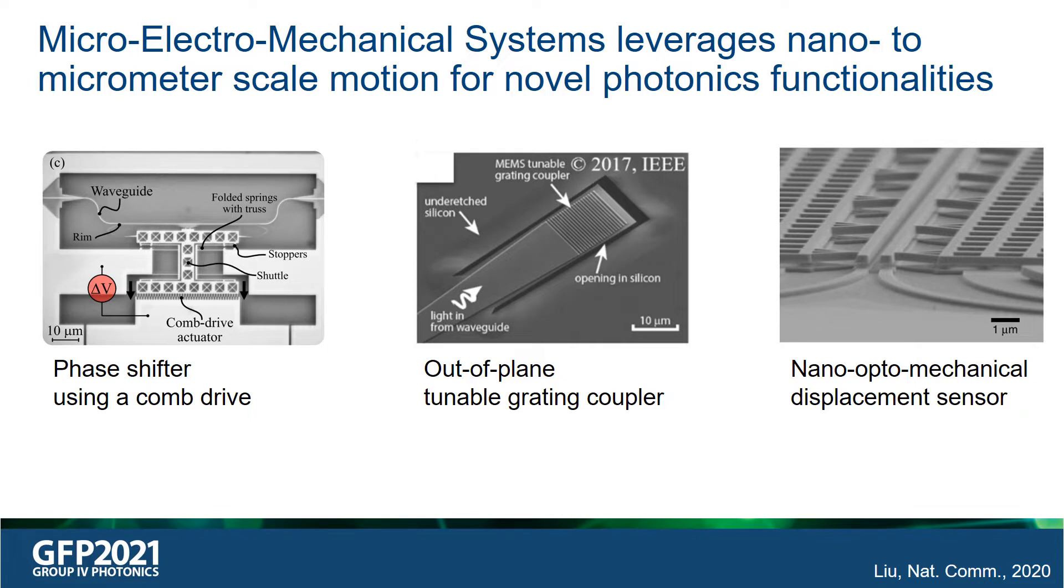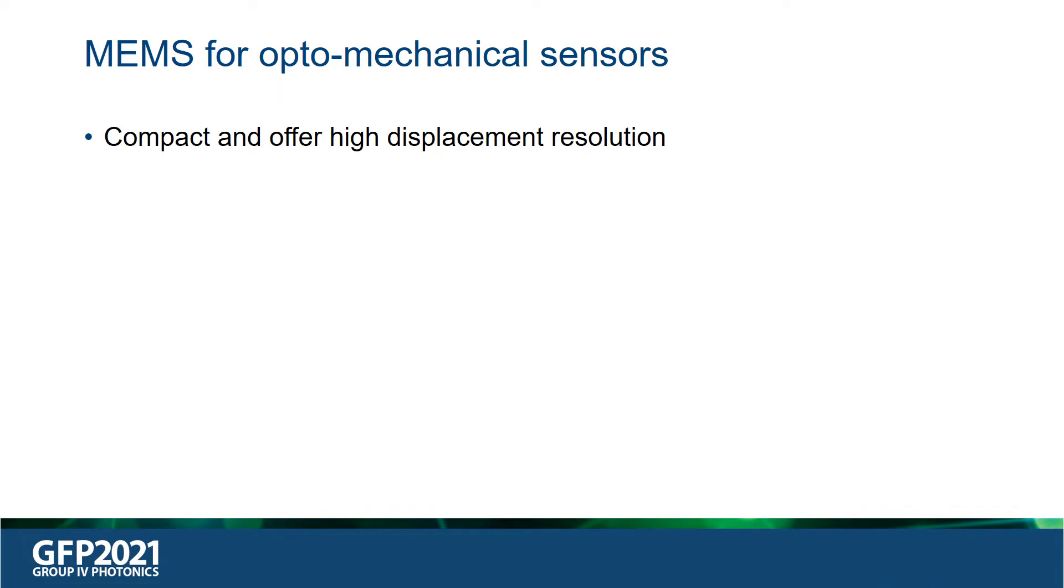For example, a displacement sensor is shown in the rightmost figure. For mechanical sensing applications, photonic MEMS is particularly attractive because they're compact, integrated, and offer high displacement resolution.